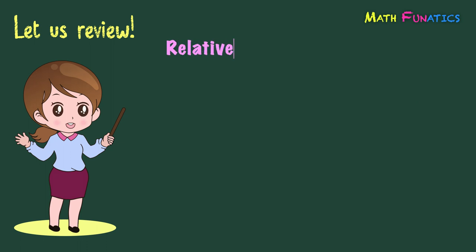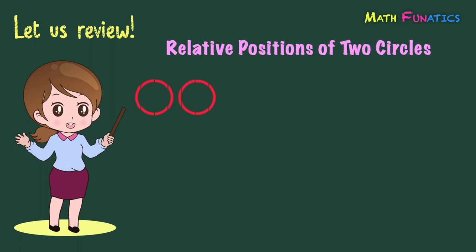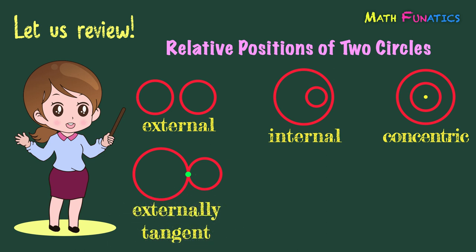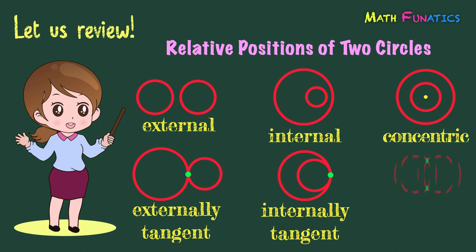There are six relative positions of two circles. If one circle is completely outside the other circle, then it is called external. If one circle is completely inside the other circle, then it is called internal. If one circle is inside the other and they share a common center, then it is called concentric. If the circles intersect at one point externally, then we call this externally tangent. If the circles intersect at one point internally, then we use the term internally tangent. And if the circles intersect or meet at two points, then this is what we call secant.